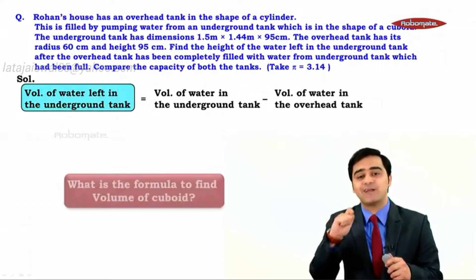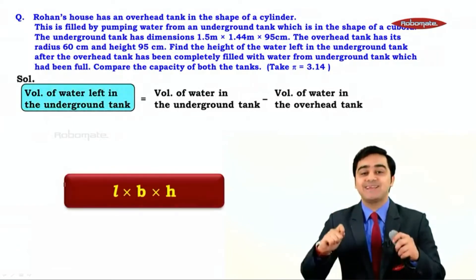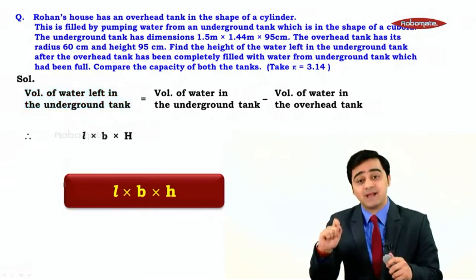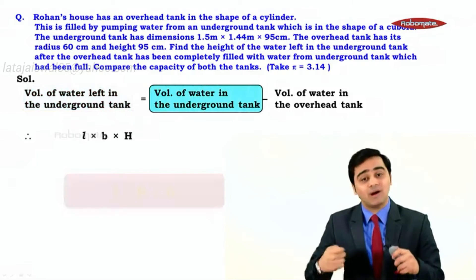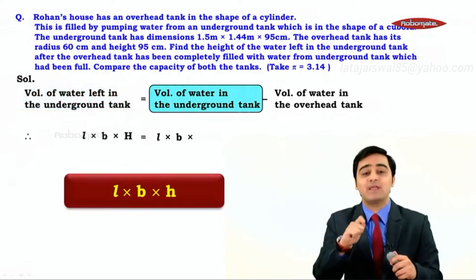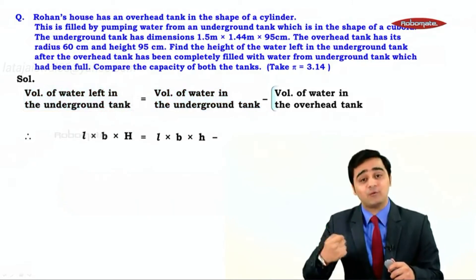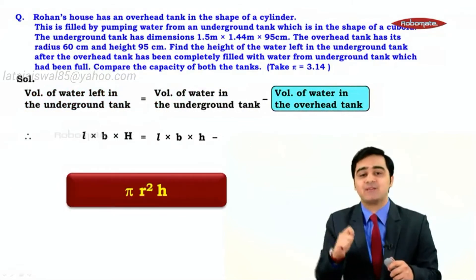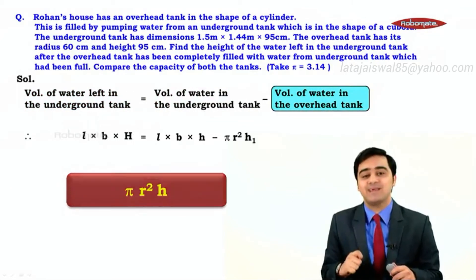The formula for the volume of a cuboid is L × B × H. So we write L × B × H for the height we need to find, equal to L × B × H for the full underground tank. The formula for the volume of a cylinder is π r², so we subtract π r² H₁ for the overhead tank.